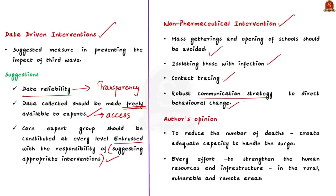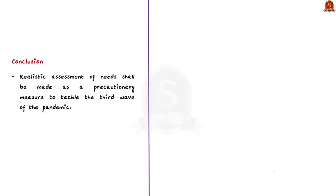As we discussed earlier, the proportion of susceptible people is higher in the younger age groups. The higher mortality recorded is not so specific to the severity of the virus or age group. It is mostly arising from the shortage of beds during a sudden surge in cases. So, in order to reduce the number of deaths, we should immediately create an adequate capacity to handle the surge. Every effort should be made to strengthen the human resources and infrastructure in the rural, vulnerable and remote areas. Finally, the author concludes that a realistic assessment of needs shall be made as a precautionary measure to tackle the third wave of COVID pandemic.